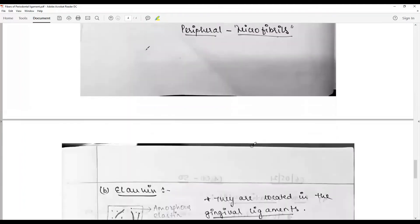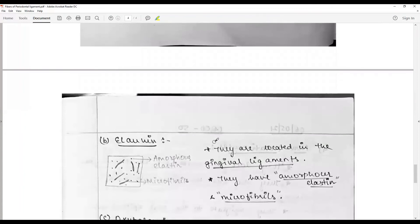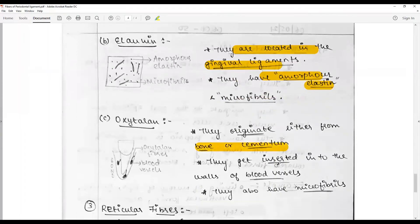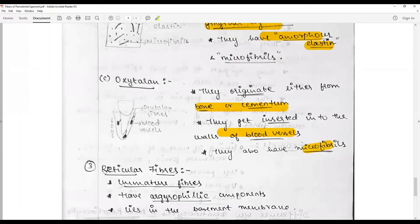Euline or elavulin are located in the gingival ligaments and have amorphous elastins and microfilaments. Oxytalin originate either from bone or cementum and get inserted into the walls of blood vessels, having microfibrils.